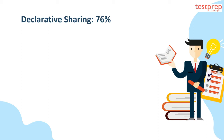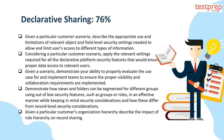Declarative Sharing at 76% covers: given a scenario, describe appropriate use and limitations of object and field-level security settings; apply relevant settings for all declarative platform security features to ensure proper data access; demonstrate ability to evaluate and implement teams for proper visibility and collaboration; demonstrate how views and folders can be segmented using out-of-box security features such as groups or roles; and describe the impact of role hierarchy on record sharing.